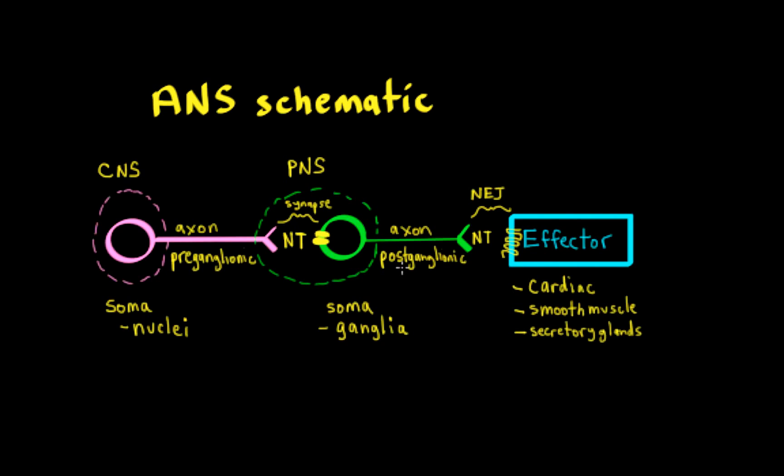And the preganglionic neurons have myelinated axons, and the postganglionic neurons have unmyelinated axons.